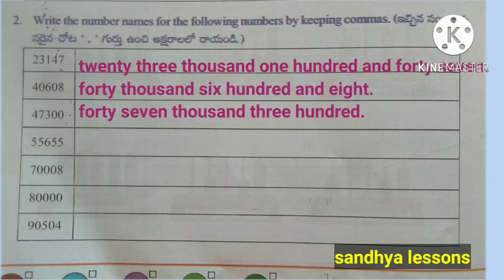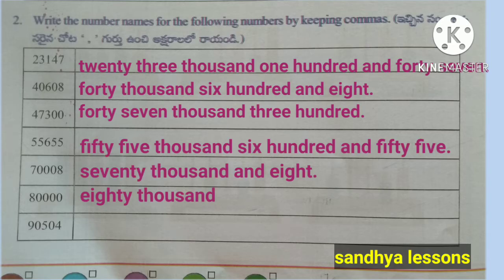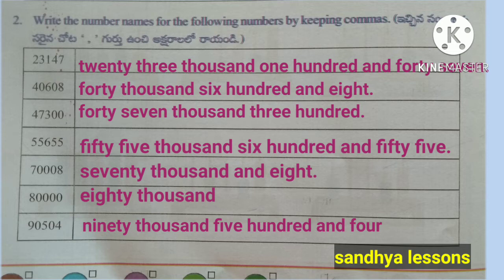Second: Write the number names for the following numbers by keeping commas: 23,147; 40,608; 47,300; 55,655; 70,008; 80,000; 90,504.